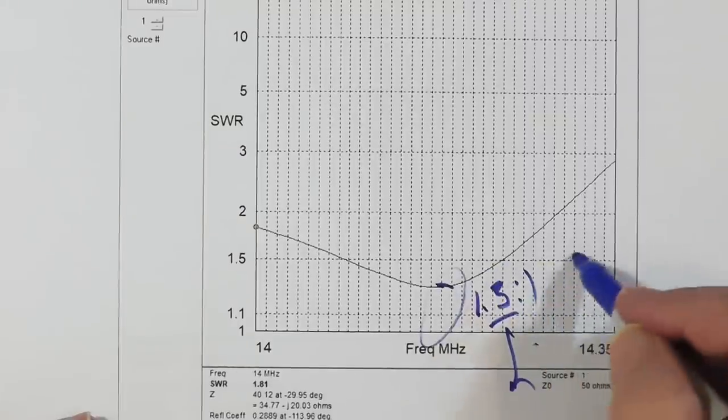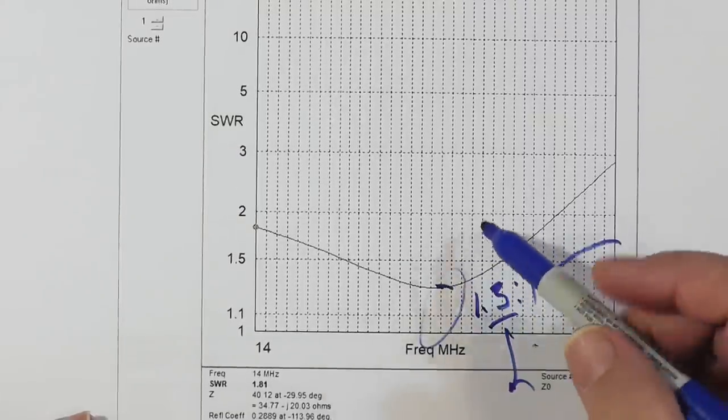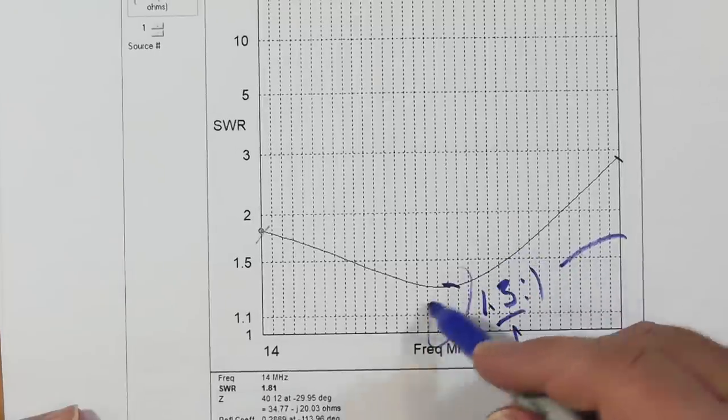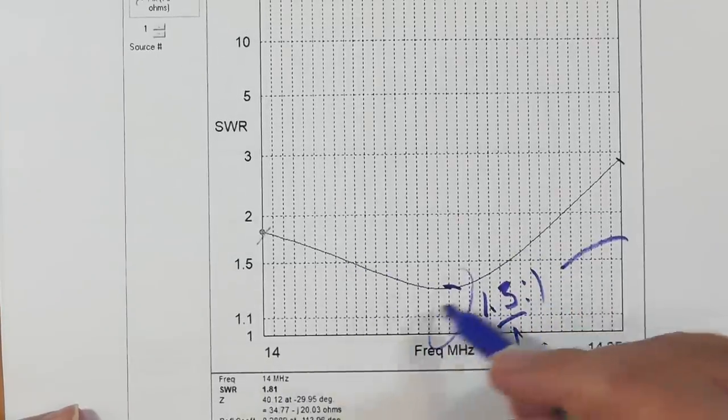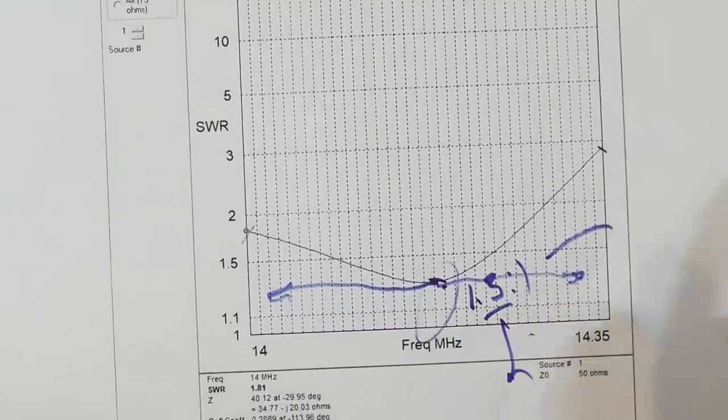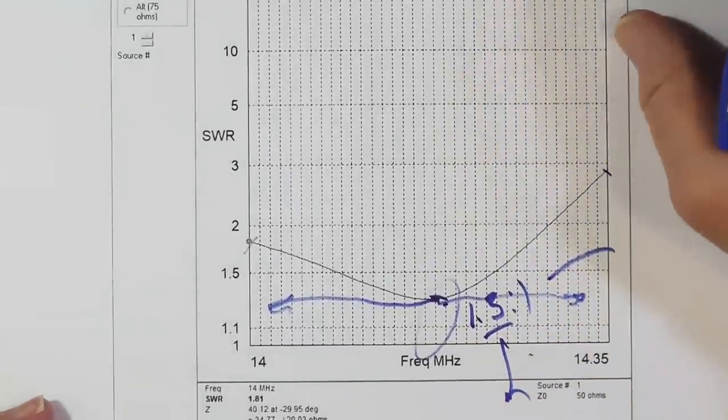Now, StepIR recommends that you do not put a tuner on this antenna. If you do, you could get that down to 1 to 1, but they suggest not doing it. Anyway, 1.3 to 1 is fine for all modern radios. You don't have to worry about this or this. You're not going to take care of it with your tuner. You're going to lengthen or shorten the wire, that tape, wire tape, that's inside the tube, which will move this back and forth like that. That's the beauty of the antenna.